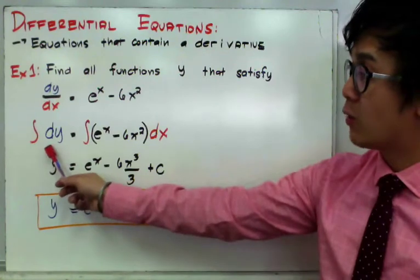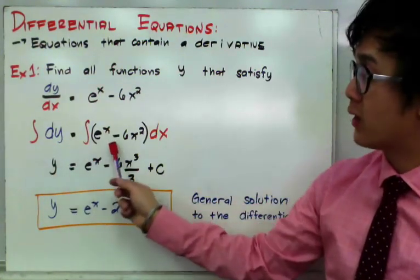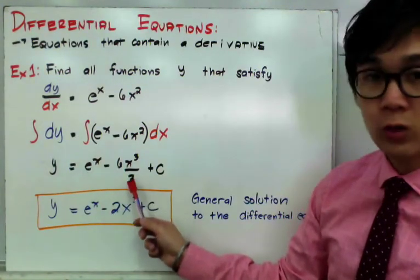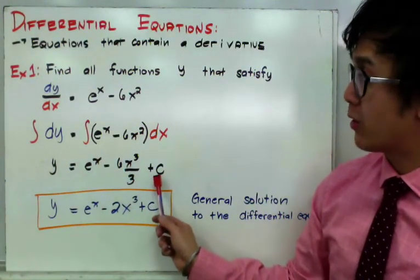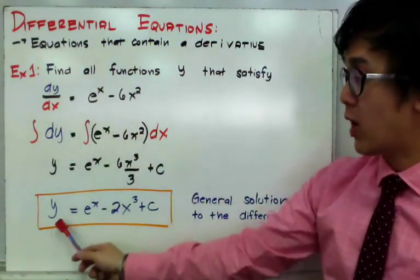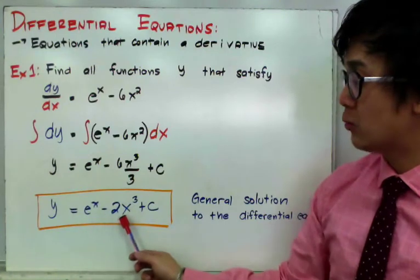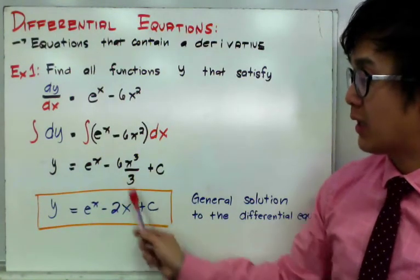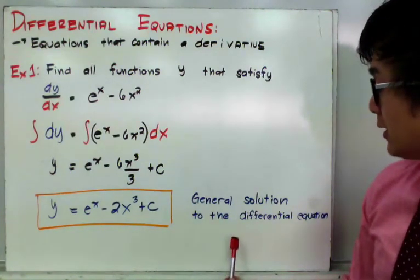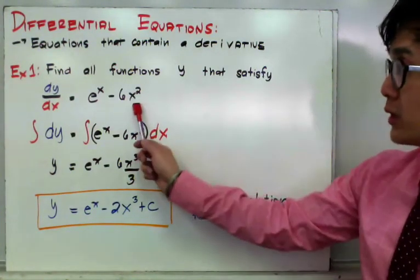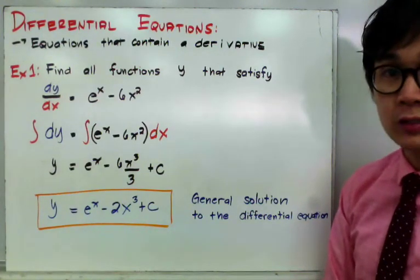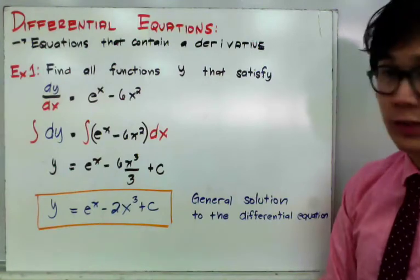The integral of dy is simply y, and the integral of the right-hand side gives e^x minus 6x cubed over 3 plus C. Simplifying 6/3, our general solution is y = e^x minus 2x cubed plus C. This is the general solution to the differential equation, which is one of the problems we're working on today.